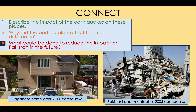Why do the earthquakes affect them so differently? The infrastructure is so different. Japan, an HIC, has the money and the people have the money to be able to invest in infrastructure that resists earthquakes. Pakistan, by contrast, does not have that same infrastructure. There is also the idea of corruption here. Corruption is where governments and people in power use money and power for their own benefit, not to help the people. In Pakistan, corruption is a major problem because money that the government should use to help build stronger buildings is in fact kept by people in power. In Japan, that doesn't happen nearly as often, so the money is spent protecting people from earthquakes.